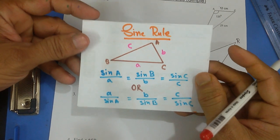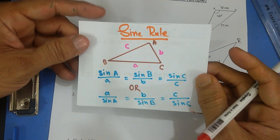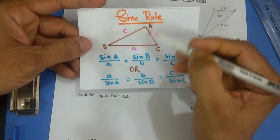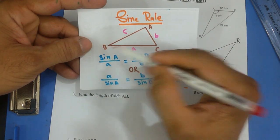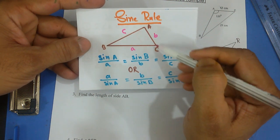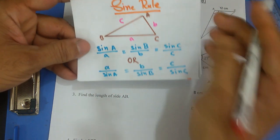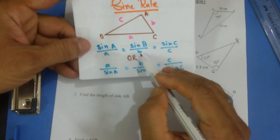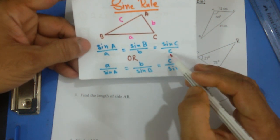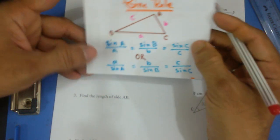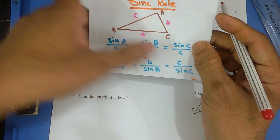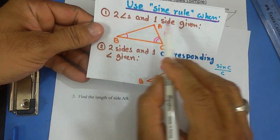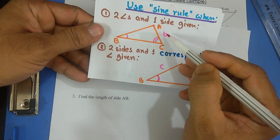In one of my previous videos where I proved the sine rule, I told you that the sine rule applies to a non-right angle triangle ABC, where opposite of angle A is side a, opposite of angle B is side b, and opposite of angle C is side c. When we have that, sine A over a equals sine B over b equals sine C over c, or the reciprocal: a over sine A equals b over sine B equals c over sine C. We use the sine rule when two angles and one side are given, or two sides and one corresponding angle are given.